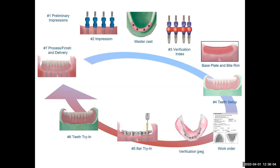If the verification JPEG looks good, we give approval and get the bar sent back to the laboratory. Then we do one final try-in with the bar and denture teeth. If everything looks good, we're ready to process and finish for delivery. This is your average protocol on hybrid type cases.